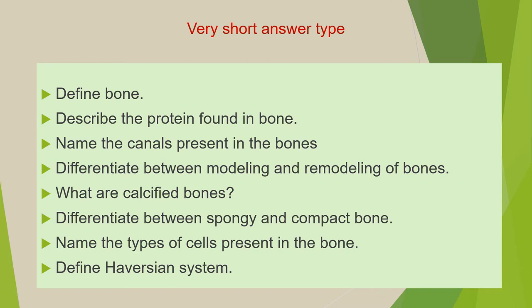The first question from this category is: define bone. Second is: describe the protein found in bone. Third is: name the canals present in the bones. Next: differentiate between modelling and remodelling of bones. Next: what are calcified bones. Next: differentiate between spongy and compact bone. Next: name the types of cells present in the bone. Next: define Haversian system.